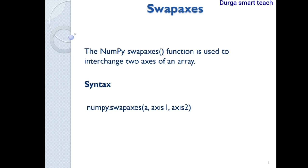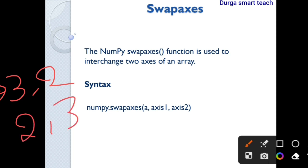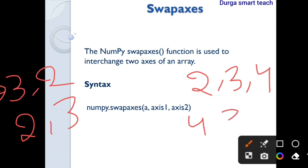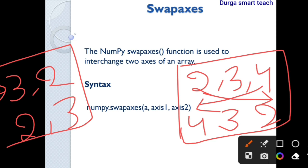Transpose is used to exchange row elements into column elements and column elements into row elements. For a two-dimensional array with three rows and two columns, it will exchange the shape to two by three. For a three-dimensional array with two planes, three rows, and four columns, the transpose will give four planes, three rows, and two columns — it reverses the entire shape.